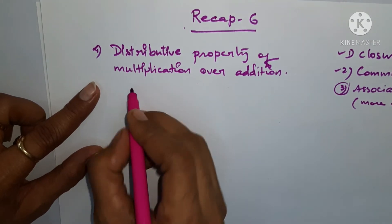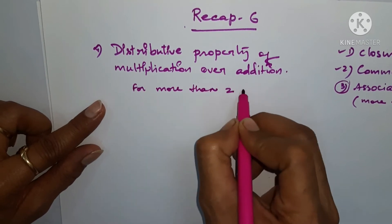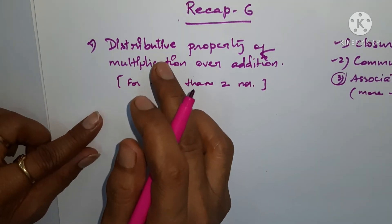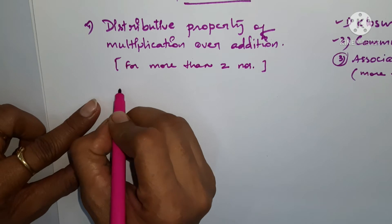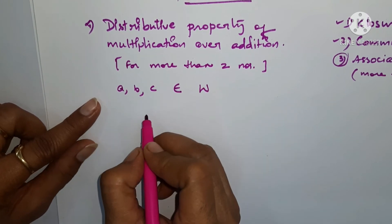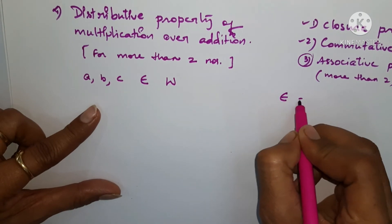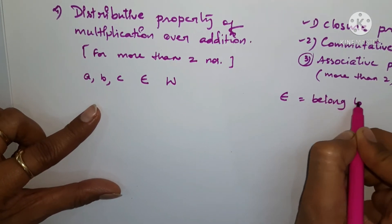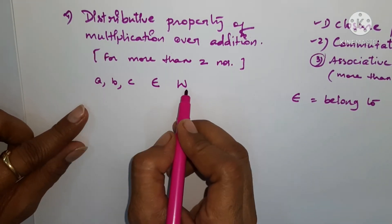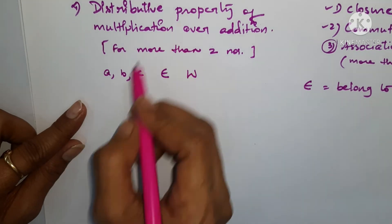So for more than two numbers — suppose a, b, and c are three numbers taken from the whole numbers family. The symbol I'm using means 'belong to', meaning I am taking three numbers out of the whole numbers. Now a, b, c belong to whole numbers, and in such a case we will see how the distributive property applies.